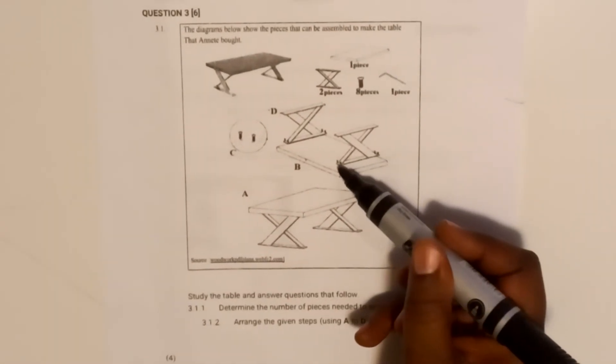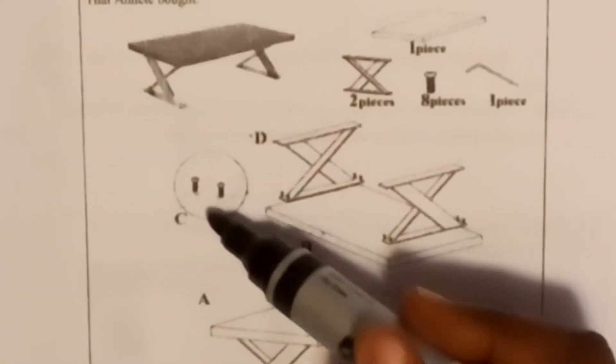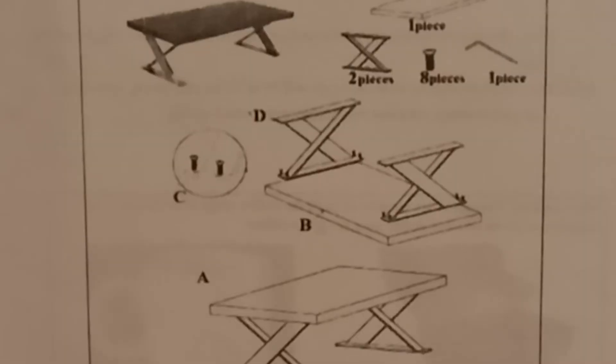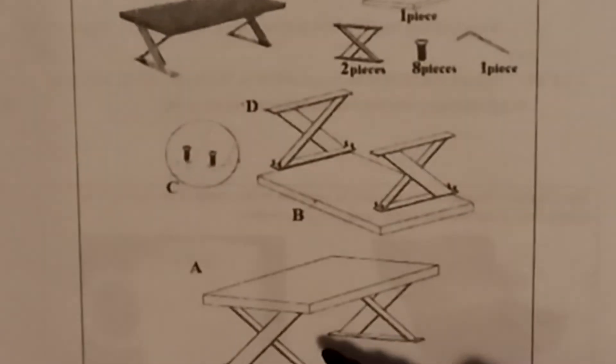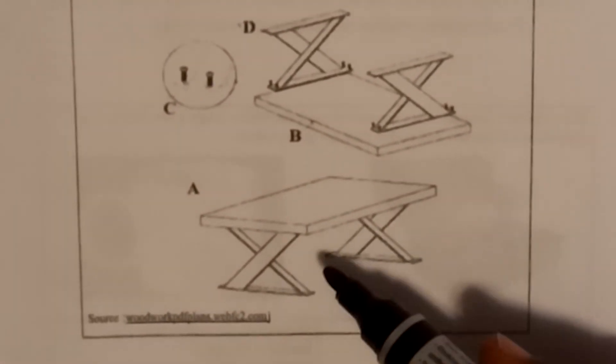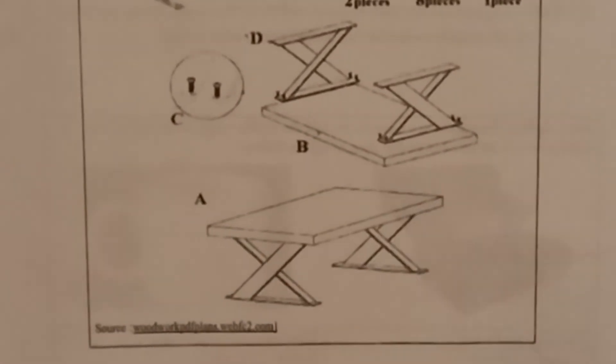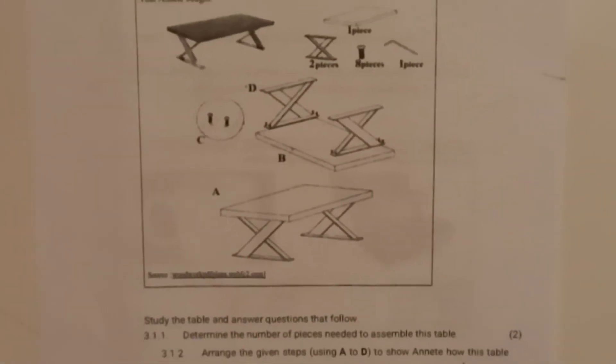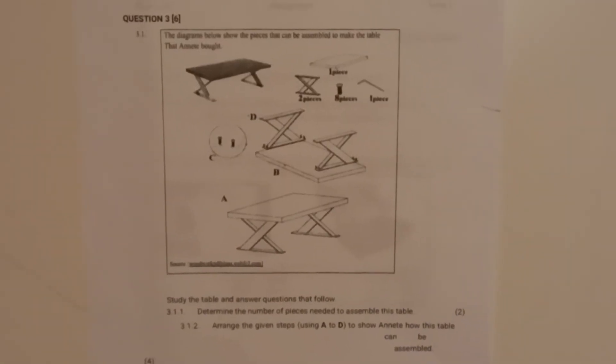And then after you have put them like that, you need to screw them - that's your C. They've shown with a diagram that C is screwing the legs onto the table, then C. And then A is the complete table - now the table is complete, you have done everything, that's your A. That's how you do this question. You actually get four marks for that - they give you one mark for each correct step.